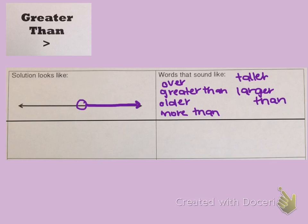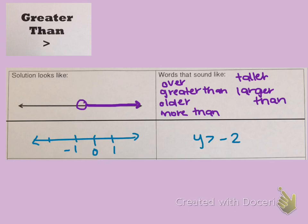Let's try it with an actual problem. We have y is greater than negative 2. We'll draw our number line, find negative 2 on it, and put an open circle around the negative 2. Then we're going to draw an arrow all the way to the right of that open dot.